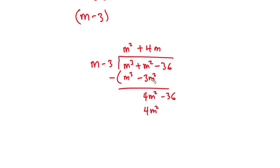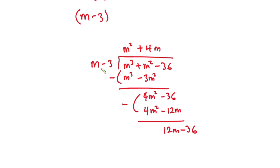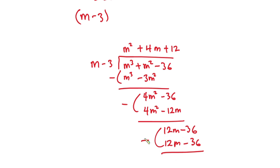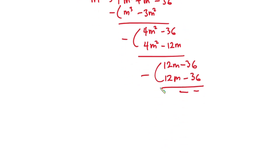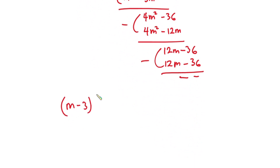4m times m is 4m squared, 4m times negative 3 is negative 12m. Subtracting: 4m squared minus 4m squared is zero, and 0m plus 12m gives 12m. Bring down negative 36. m goes into 12m giving 12. 12 times m is 12m, 12 times negative 3 is negative 36. Subtracting: 12m minus 12m is zero, and negative 36 minus negative 36 is zero. So the remainder is zero.